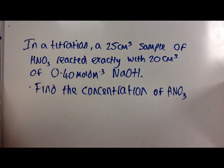This is a video about how to do titration calculations. The question says, in a titration, a 25 cm³ sample of HNO₃, which is nitric acid, reacted exactly with 20 cm³ of 0.40 moles per decimetre cubed sodium hydroxide. The question wants us to find the concentration of nitric acid.